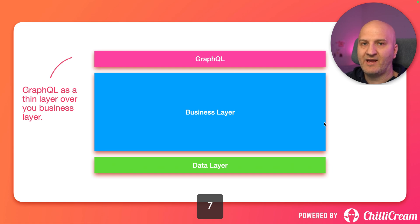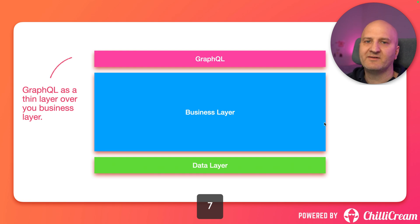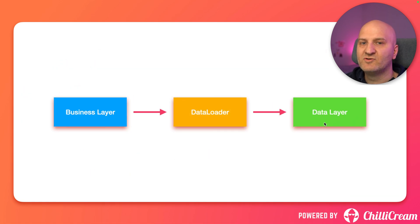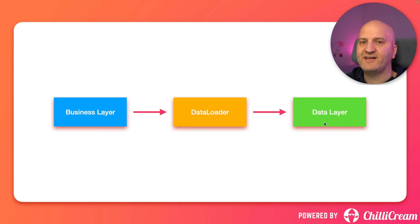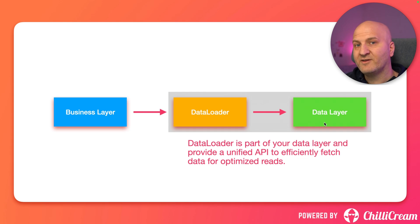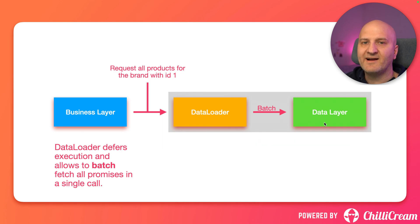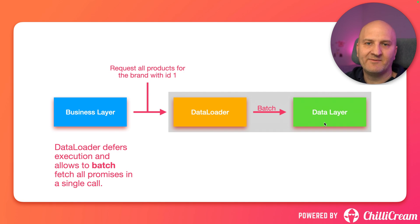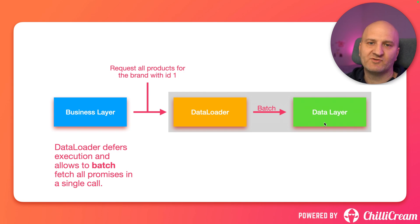The SQL explosion is caused by our business layer not knowing about the GraphQL execution context. But this is actually how we want to build our application — with clear boundaries between layers. This keeps our code simple and easy to understand. Meta already for the REST API embraces a tool for optimized data fetching called a data loader. The business layer would use a data loader to fetch data from the underlying data source. The data loader is a part of your data layer, or at least sits in front of it.